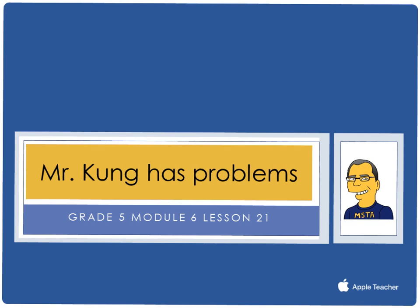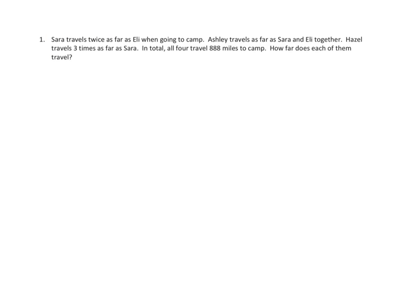Hello, and welcome to another episode of Mr. Kong Has Problems. Tonight in grade five, in module six, we are working on lesson number 21, and that means we are making sense of complex, multi-step problems, and we are persevering in solving them. Let's take a look at one problem from tonight's homework. There are only a couple on tonight's homework, so I'm going to do one of those problems to its completion.